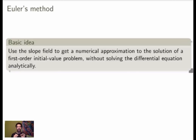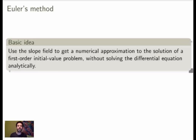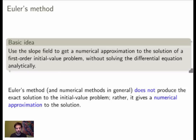The key here is that we're not solving the differential equation analytically. Just like we did when studying the slope field, but now instead of just sketching the curve, we're actually going to use the slope field to get a good numerical approximation. Euler's method does not produce the exact solution to the initial value problem — it gives you a numerical approximation. But pretty often that's all you can do when you cannot solve it analytically, so this is the best you can do.